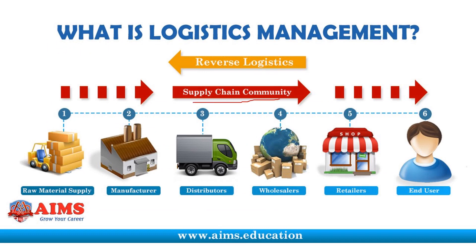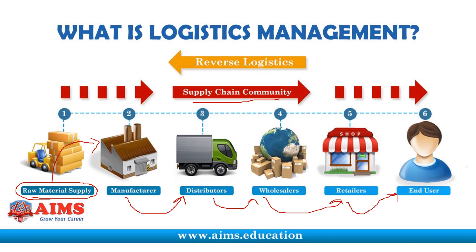Supply chain management means movement of goods from raw material — from suppliers, we get raw materials, then we process them at the manufacturing company. Raw material is moved to the manufacturer, then after finished goods it moves to the distributor, then wholesaler, then retailer, and then the end user. So there is one chain of supply from raw material to finished goods, and that is called supply chain management. Logistic management is a part of supply chain management.